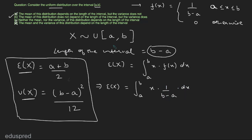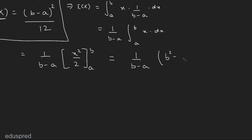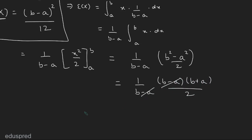Since a and b are constants, 1 divided by b minus a is also a constant, so we can take it outside the integral. This gives us 1 divided by b minus a times the integral of x from a to b dx. Integrating x gives x squared divided by 2. Substituting the limits, we get 1 divided by b minus a times b squared minus a squared divided by 2. Since b squared minus a squared equals b minus a times b plus a, the b minus a terms cancel, leaving expected value of X equal to b plus a divided by 2.